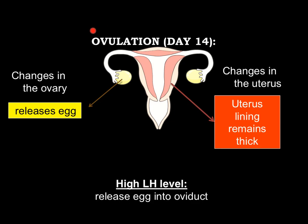Next we have the ovulation period, which is just day 14. In the ovary, the egg is now going to be released, and the uterus lining is going to remain thick. This is caused by the high LH level, which causes the egg to be released into the oviduct.